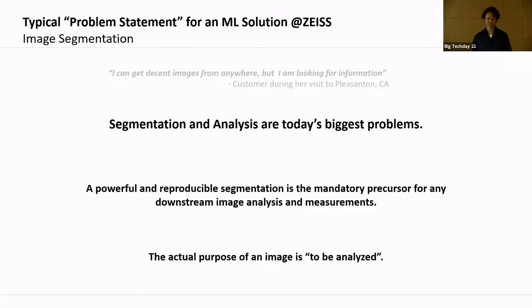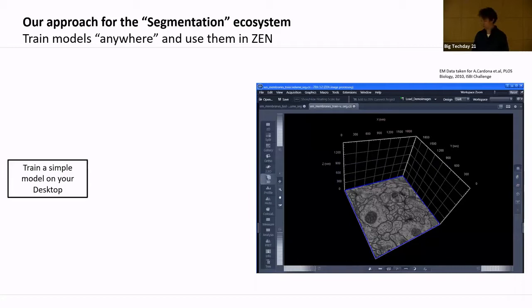Let's come back to our segmentation example. A typical problem statement: segmentation and image analysis are the biggest challenges because the actual purpose of an image is to be analyzed. Image analysis requires segmentation — if you can't segment it, you can't analyze it, you can't extract numbers, and you can't get information. If segmentation doesn't work, then you are stuck. This is why segmentation is such a big challenge, and where machine learning and AI can be super helpful.